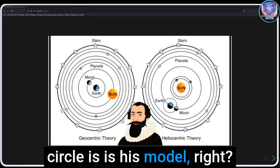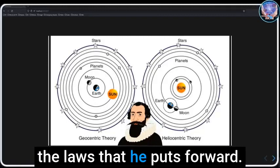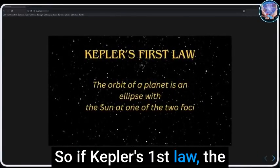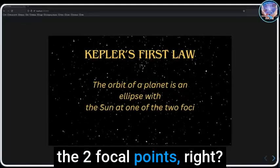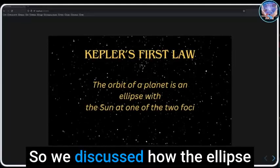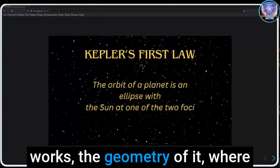The geocentric model and then the heliocentric model with Kepler's elliptical orbits. The deviation from the perfect circle is his model. Now we're going to discuss the laws that he puts forward. Kepler's first law: the orbit of a planet is an ellipse with the sun at one of the two focal points or foci points.